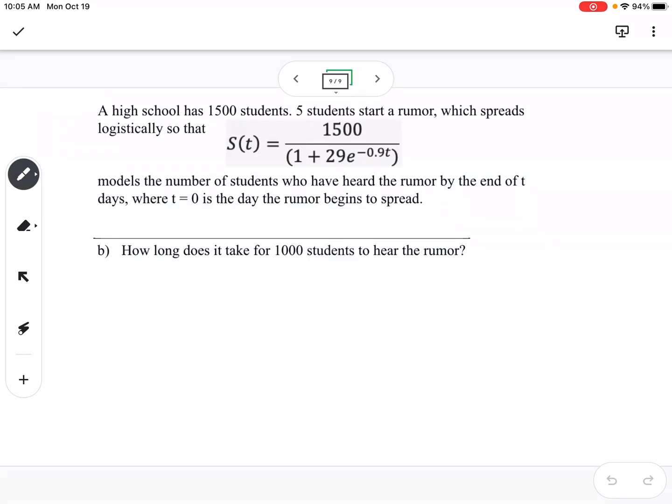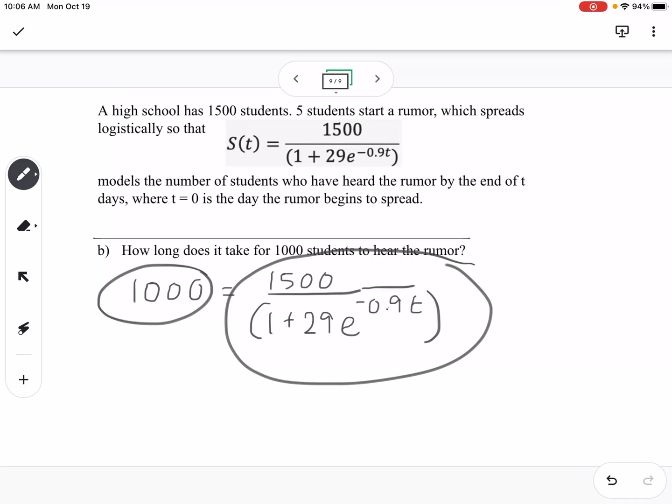The second problem we're answering is how long does it take for 1,000 students to hear the rumor? We're going to say 1,000 equals 1,500 over 1 plus 29e to the negative 0.9t. We have not talked about logs yet, so you could solve this using logs or you could graph the left-hand side of the equation and the right-hand side of the equation and figure out where they intersect. At this point in all of these lessons, that would be my expectation, that you would graph and find the intersection point. You should from the graph get that T is approximately 4.5 days.